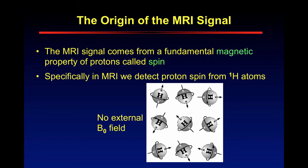The MRI signal comes from a magnetic property of protons called spin. In MRI, for the most part, you're detecting this spin from hydrogen atoms. Now, there are other nuclei that have an uneven number of electrons — so they're unpaired protons — that result in spin and that you can detect.